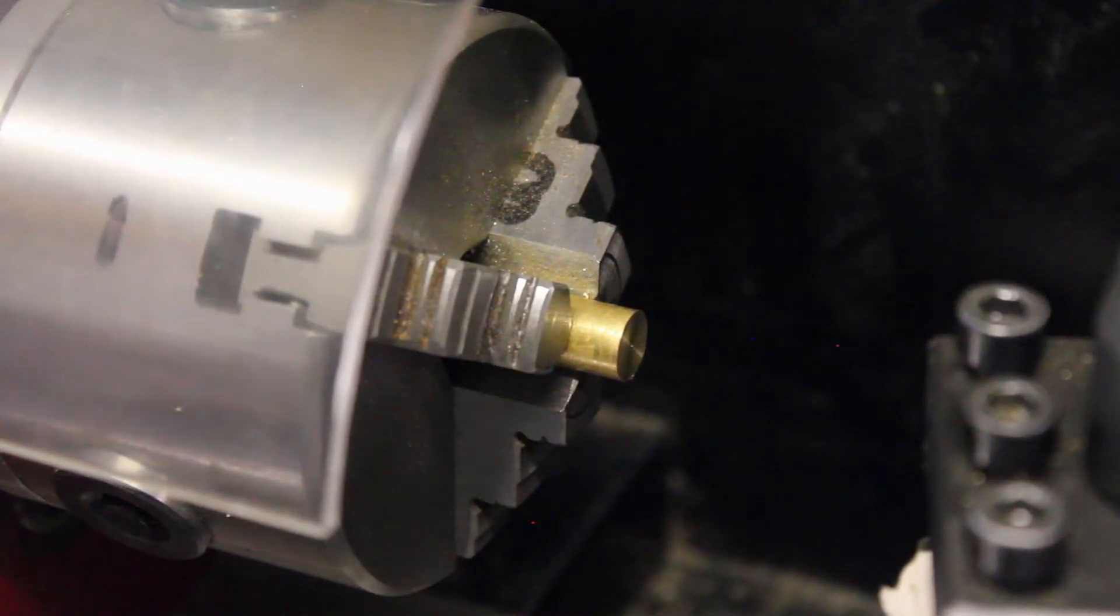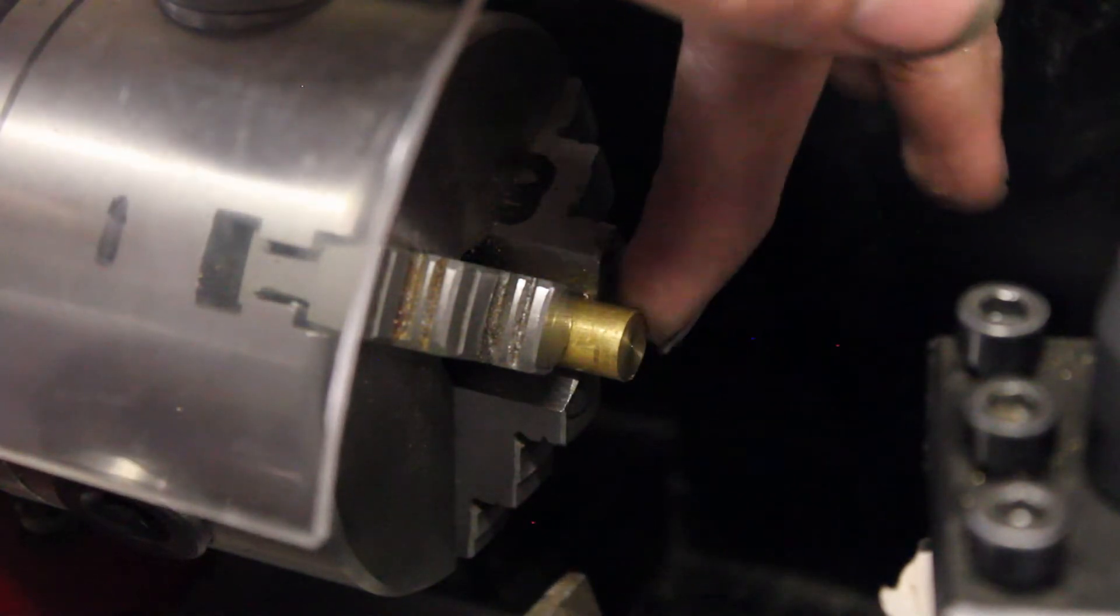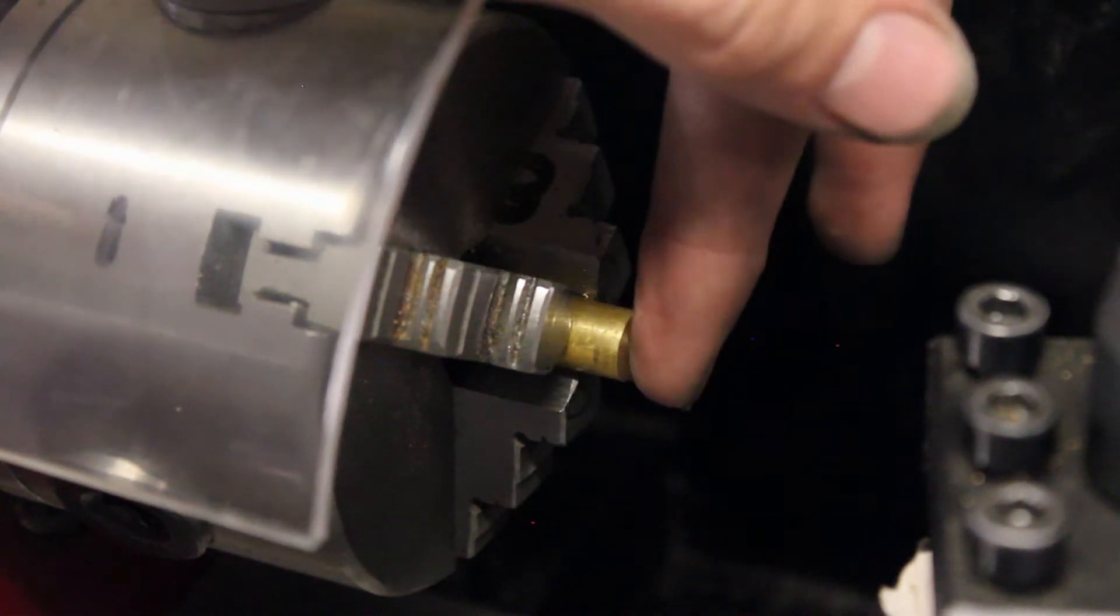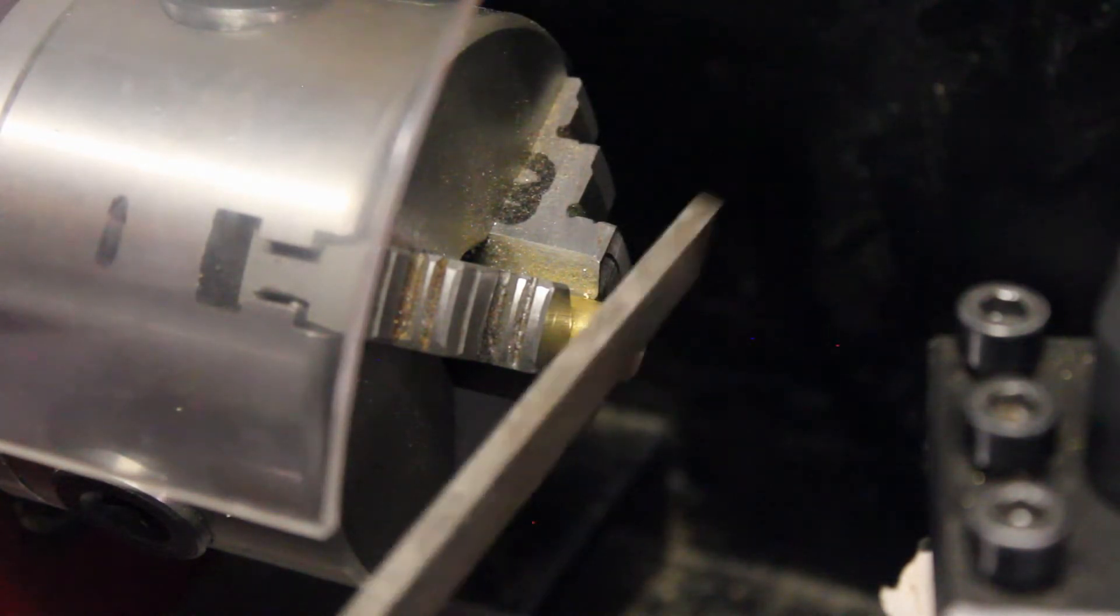Now you might think because we just faced our material, we're done. But there's always one more step. There's a sharp burr on the edge of this circle here. And you can just get rid of it with a file real quickly.